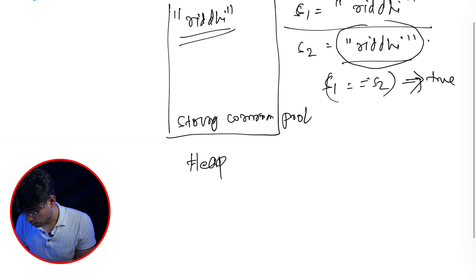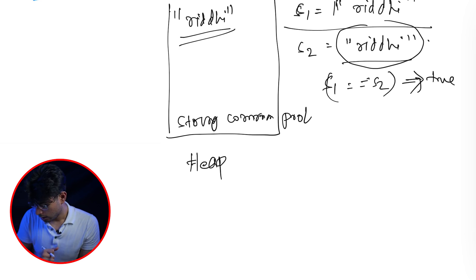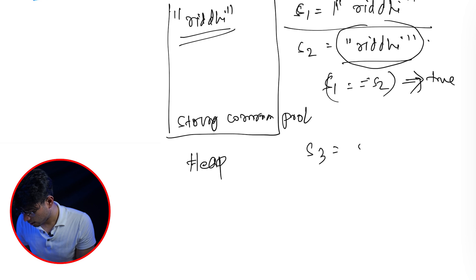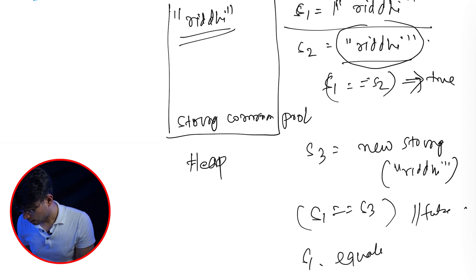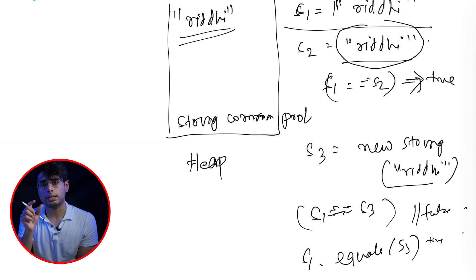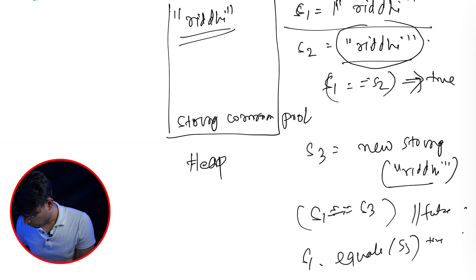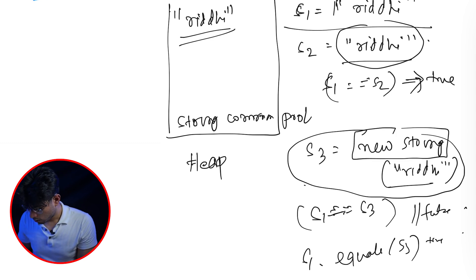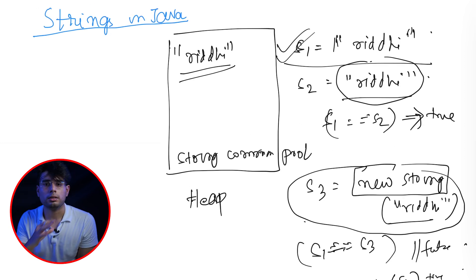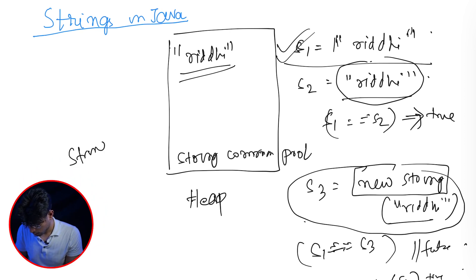Now you might question - why can't we check string equality in Java using double equals only? Because if the contents of the string are the same, and the JVM returns the same instance, then double equals should also work. The answer is: yes, if you are using string literals with the same contents, double equals will return true. But the problem is - what if someone dynamically creates a string using 'new String("Riddhi")' and then compares s1 == s3? In that case it will return false. But s1.equals(s3) will return true, because dot equals checks the contents of the string. Double equals checks the address. When you dynamically create a string using the new keyword, it doesn't go to the string common pool - it simply creates a new string at a new memory address. That is why it is always advisable to use dot equals.